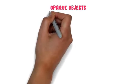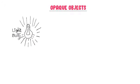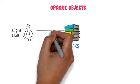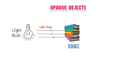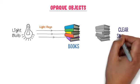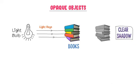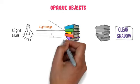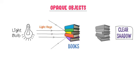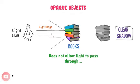Now what about opaque objects? Well, again consider a luminous object like a bulb that produces light. I place a book in front of the bulb. Light rays are hitting the book. On the opposite side, we see that the book is not allowing any light to pass through it and a clear shadow is formed. The book absorbs some light and reflects the remaining rays of light.